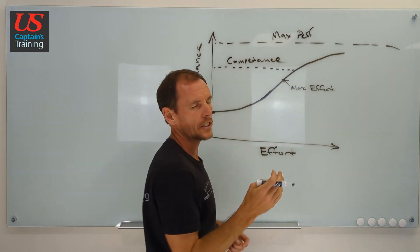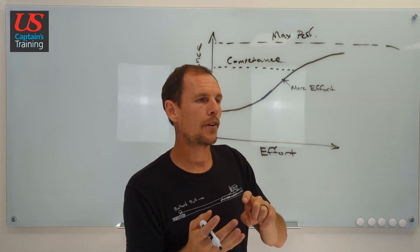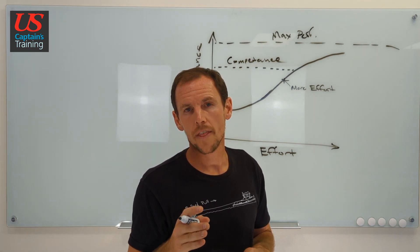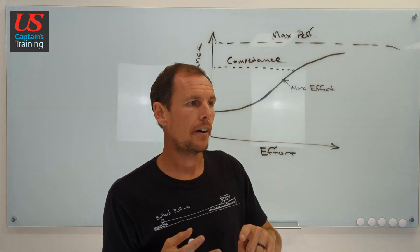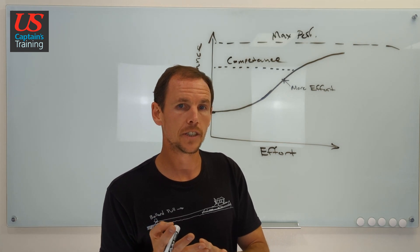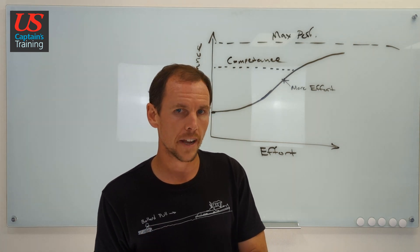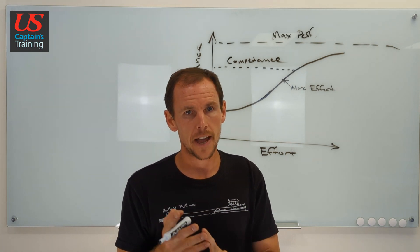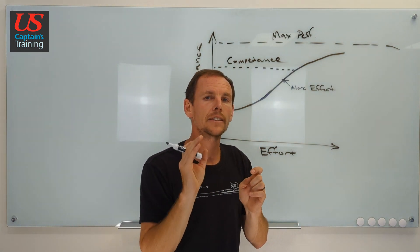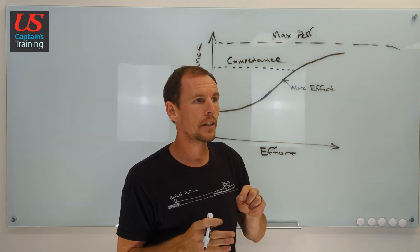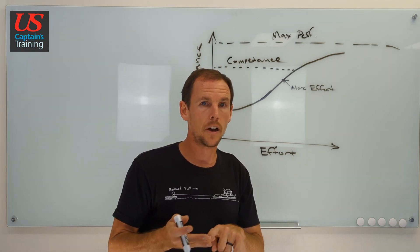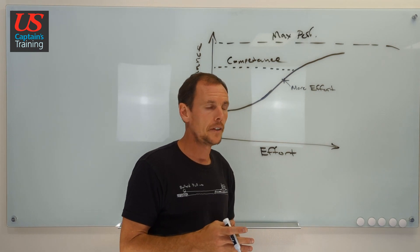But right in here, there's these nuances like the vessels that give the same fog signal, whether underway or at anchor. So it starts to get into these very nuanced details and they're the last things and they take a lot of effort to keep straight. Same with like bells and gongs for vessels over a hundred meters aground or vessels under a hundred meters aground.